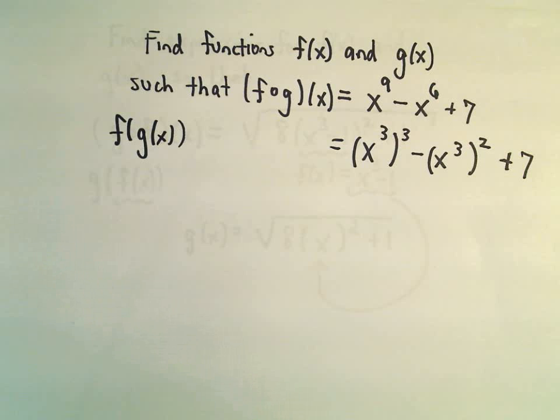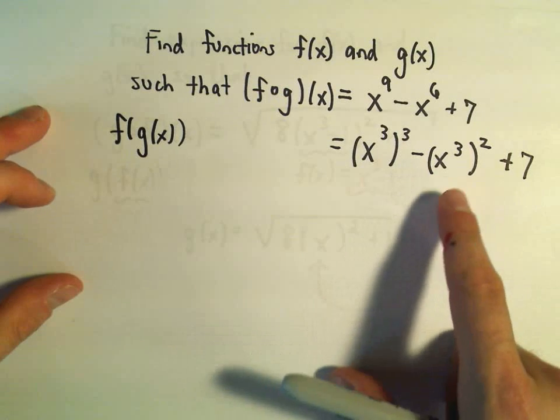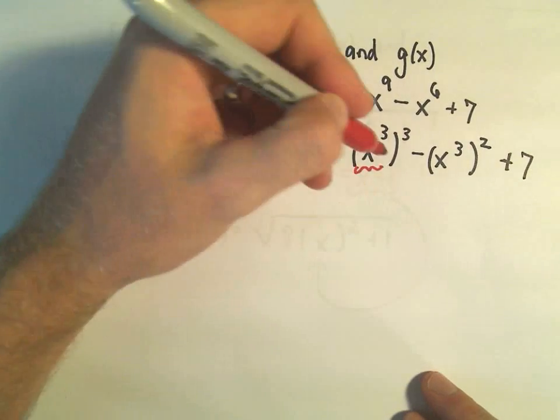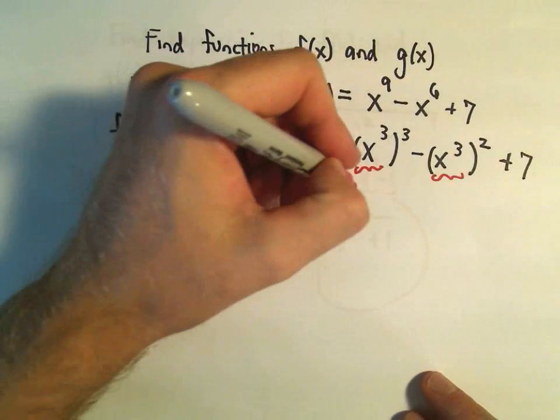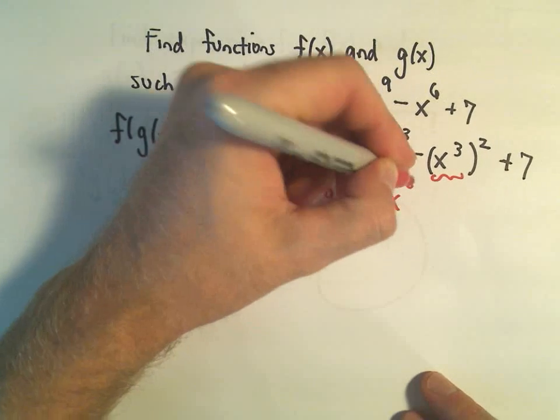And now I'm kind of doing this trick where we've got something in parentheses being raised. Notice the same things inside the parentheses. So I'm going to let this inside function, I'm going to let that be my g(x). So I'm going to let g(x) equal x³.